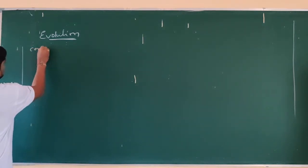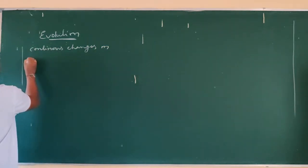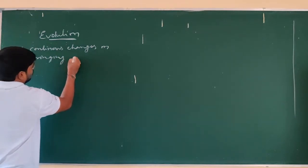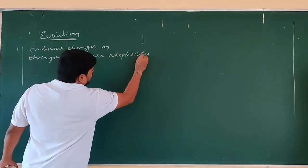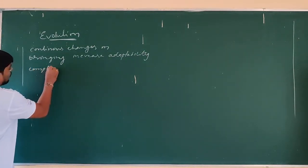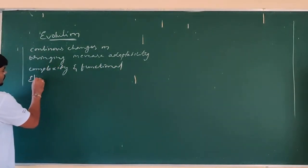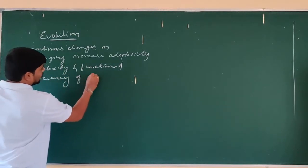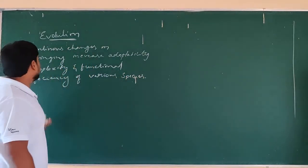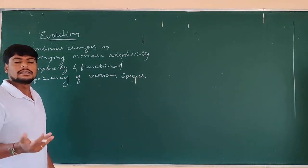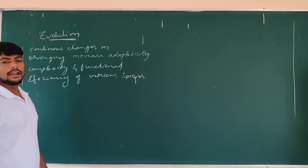Evolution means continuous changes bringing increased adaptability, complexity of organisms, and functional efficiency of various species. This is simply called evolution — continuous changes occurring for several generations of species, calculated by means of nature.